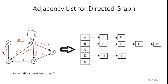Now instead of just storing the node name, we also store the weight. For A to B, the weight is 2, so instead of B we store the pair (B, 2). For A to E, the weight is also 2, so we store (E, 2). Each node in the list becomes a pair: the node name and an integer weight.